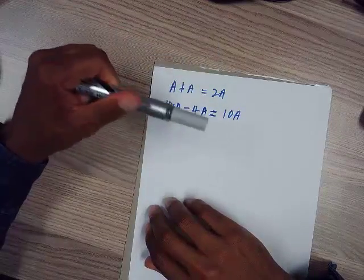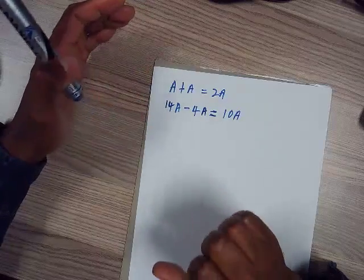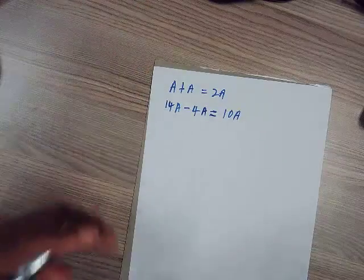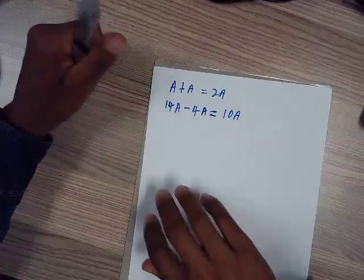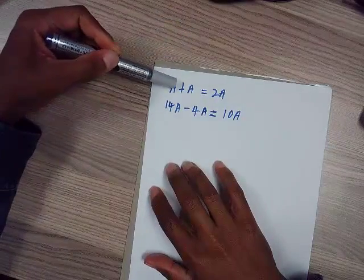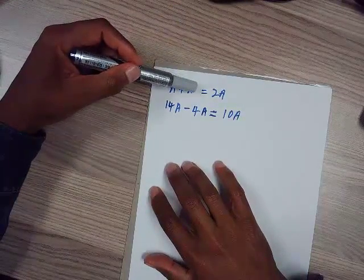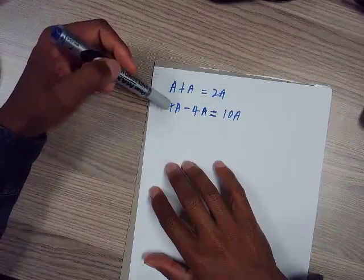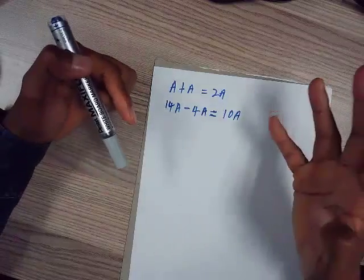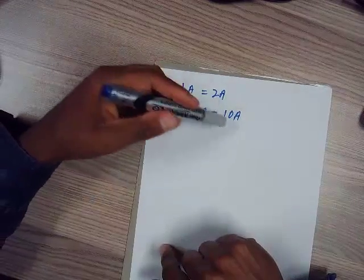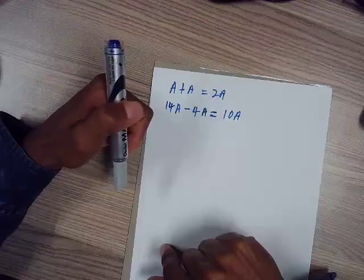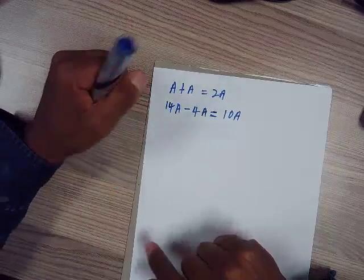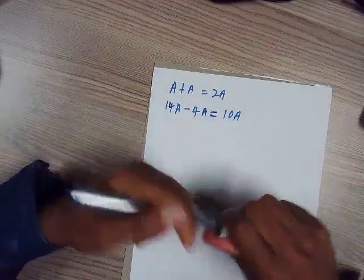Like if I have an avocado and an avocado, I'm going to have two avocados. If I have a bag of 14 apples and I remove four from that bag, I will be left with 10 apples, right? So that's how you should treat it. Now I'm moving over to simplification.